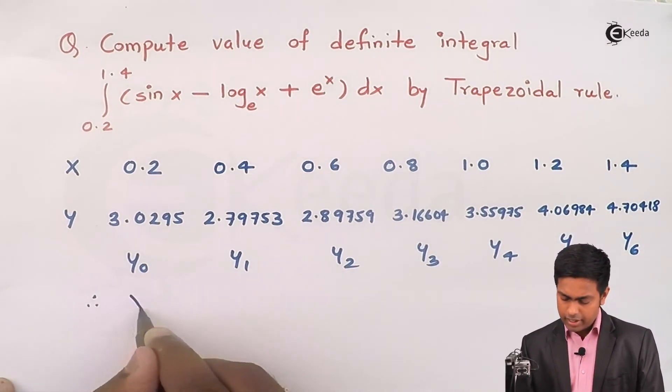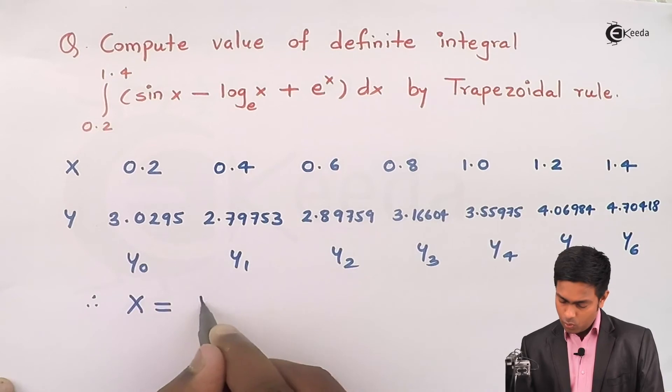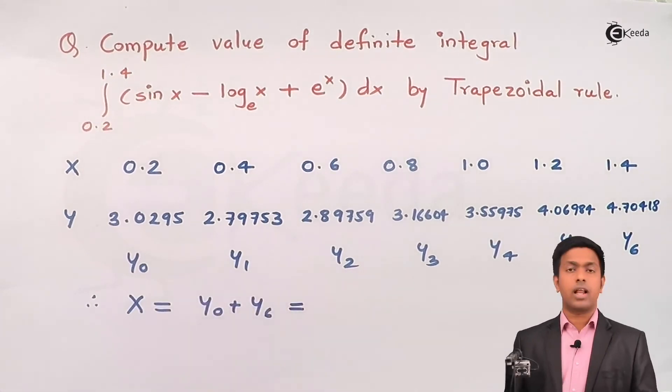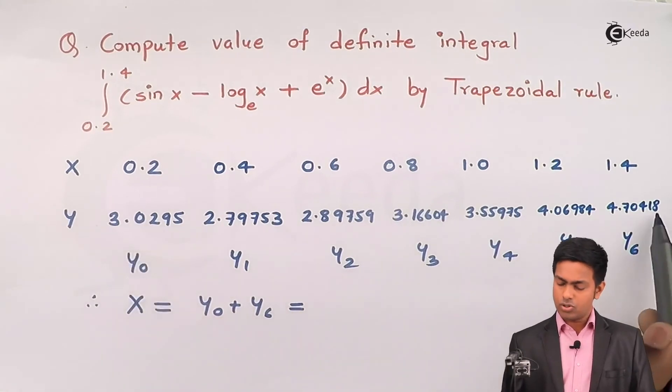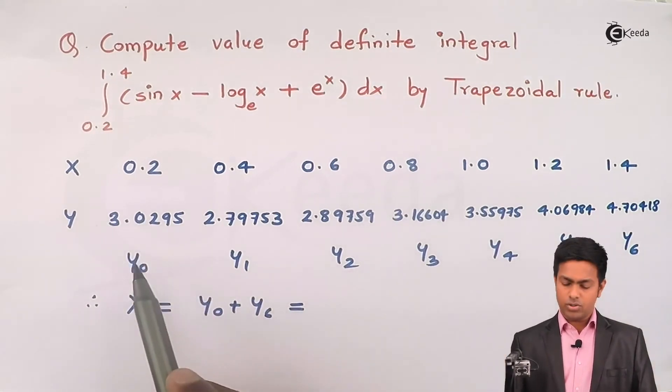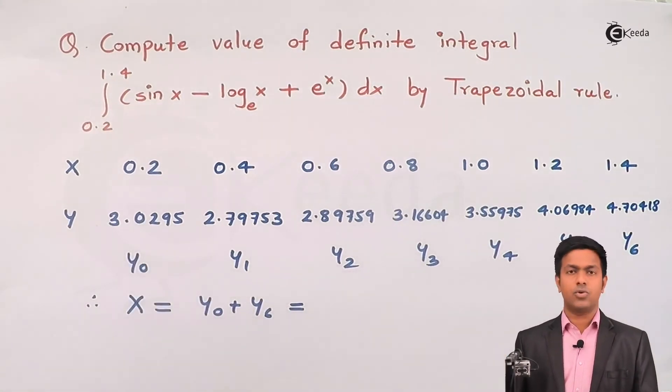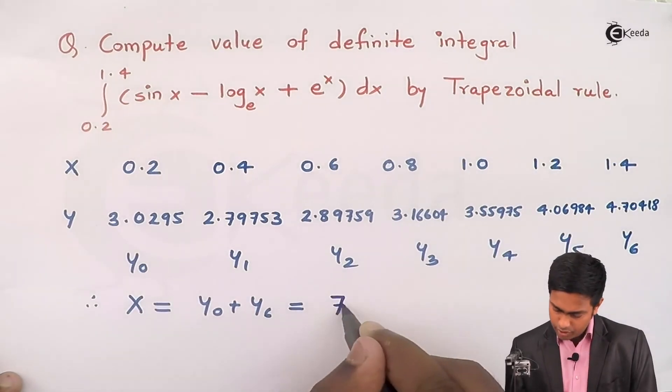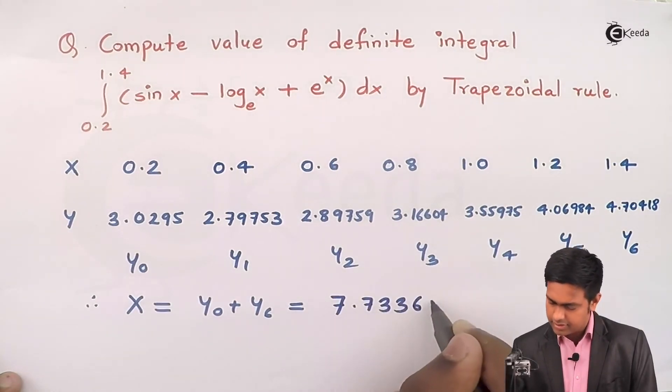So here I'll say therefore capital X is equal to y0 plus y6. So you can take your calculator and put these two values. By substituting these two values of y0 and y6 in calculator you will get answer as 7.73368.